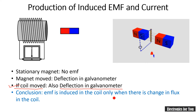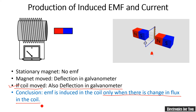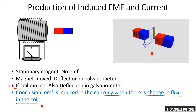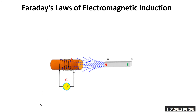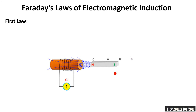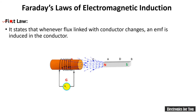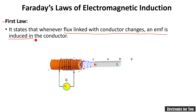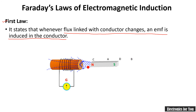We can conclude that EMF is induced in the coil only when there is a change in flux in the coil. This is actually Faraday's law of electromagnetic induction. Faraday's first law states that whenever the flux linked with the conductor changes, an EMF is induced in the conductor. The flux linked with the conductor is changing and therefore the EMF is induced in the conductor.